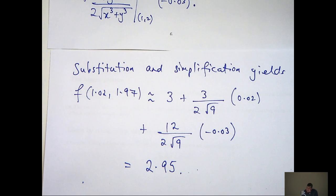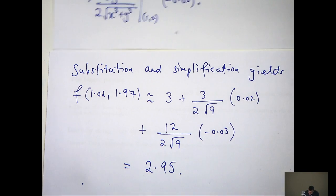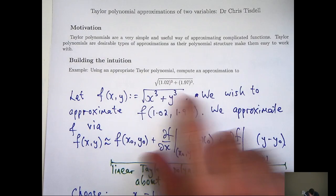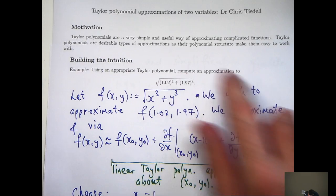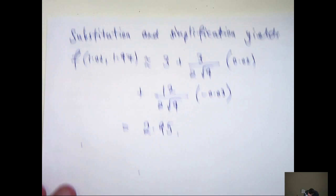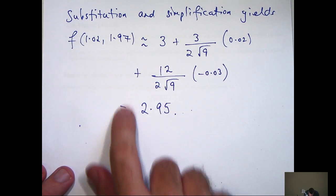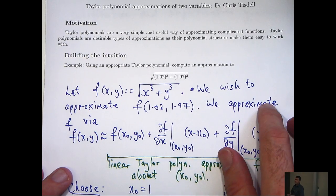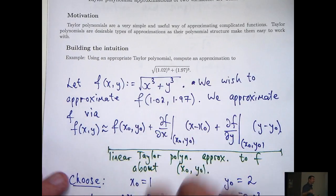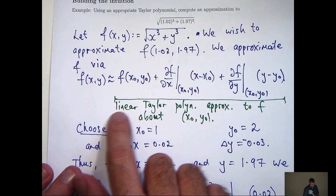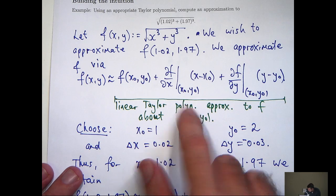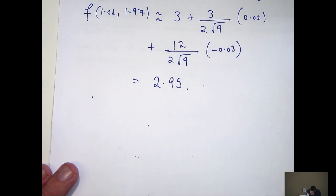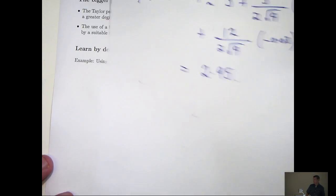So let's test to see if we're fairly accurate here. We knew at the start that this was going to be something like 3, and I said we can do better than that. Well, we've got this value here, 2.95. So we're a little bit more precise there. Now if we wanted a greater degree of accuracy, you could use a Taylor polynomial up to and including the quadratic terms. But let's actually look at the bigger picture here.